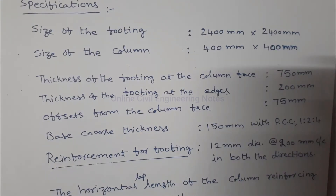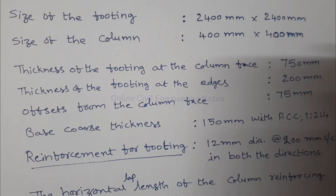Size of the footing: 2400 mm by 2400 mm. Size of the column: 400 mm by 400 mm. Thickness of the footing at the column face is 750 mm. Thickness of the footing at the edges is 200 mm. Offset from the column face is 75 mm.